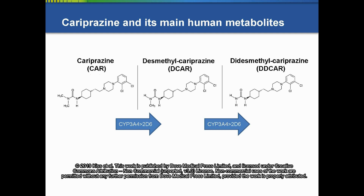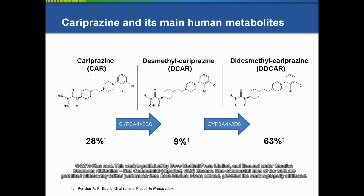In humans at steady state, cariprazine and the two main human metabolites — desmethylcariprazine (D-car) and didesmethylcariprazine (D-D-car) — represent 28%, 9%, and 63% of the active moieties in plasma, respectively.